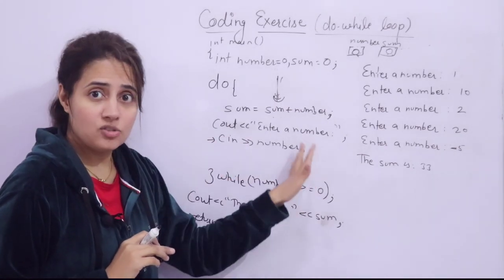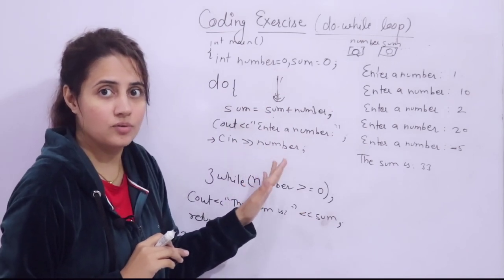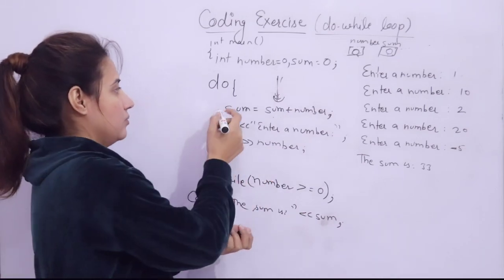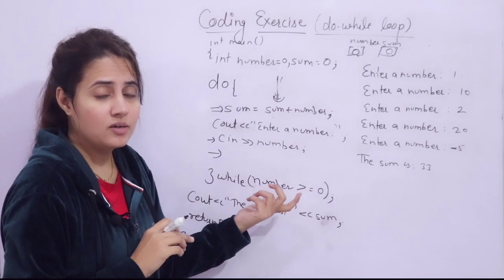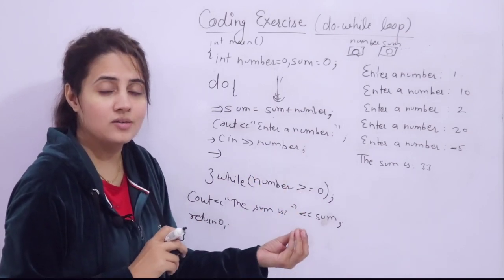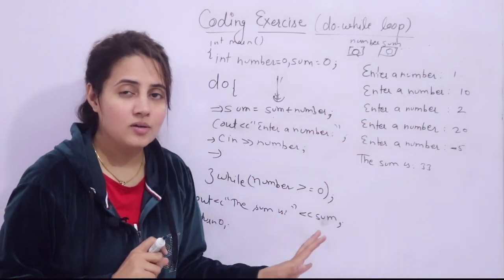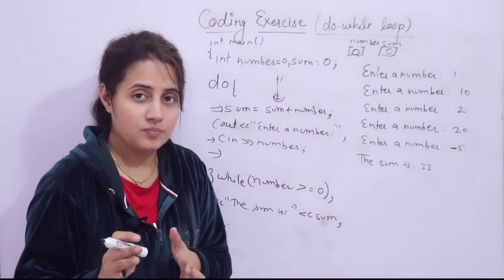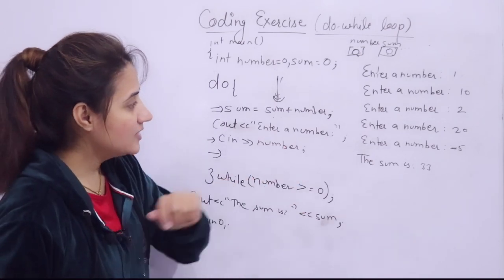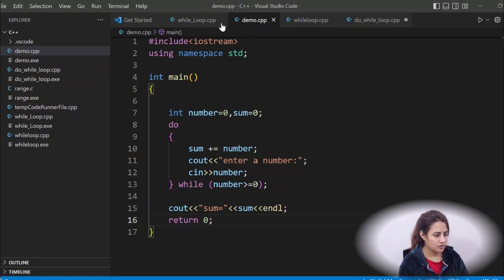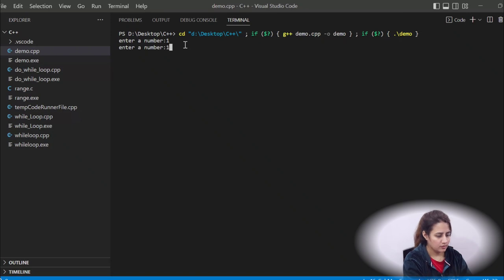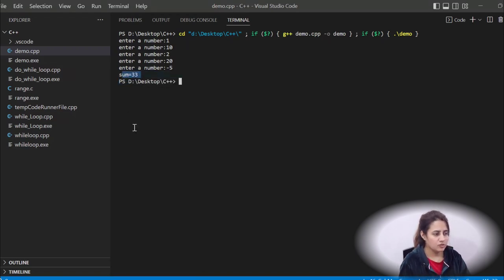Rather than just copying and pasting the correct code, you have to try it on your own. Try different logics — maybe sometimes a line is in one place and you think it's correct, but you haven't actually tested it. Write your own logic first. Let's run this: it asks 'enter a number' — 1, 10, 2, 20, minus 5 — and sum is 33. This is the output we want.